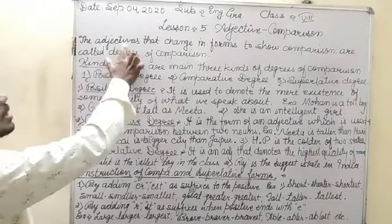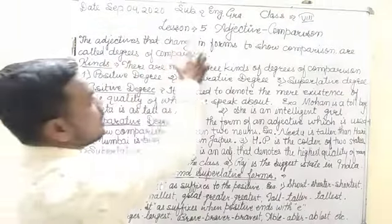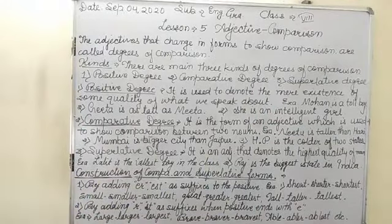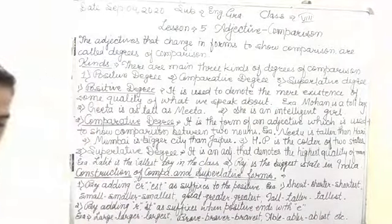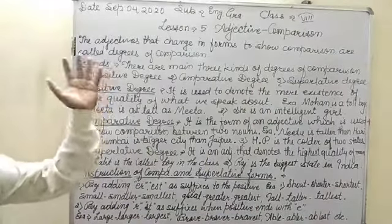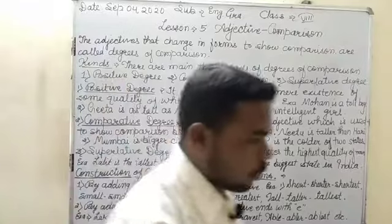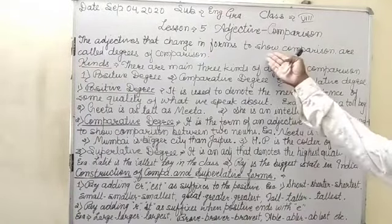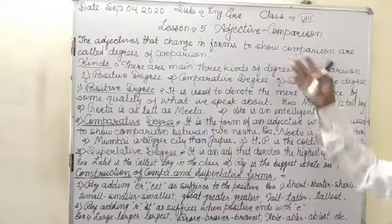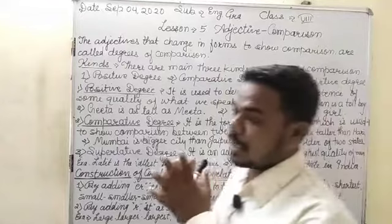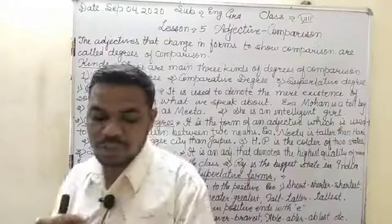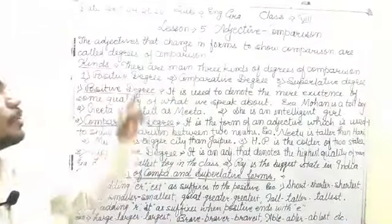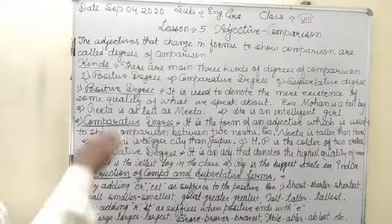The adjectives that change in forms to show comparison are called degrees of comparison — meaning an adjective which is changed according to forms especially for comparison between them. For this we use degrees of comparison.